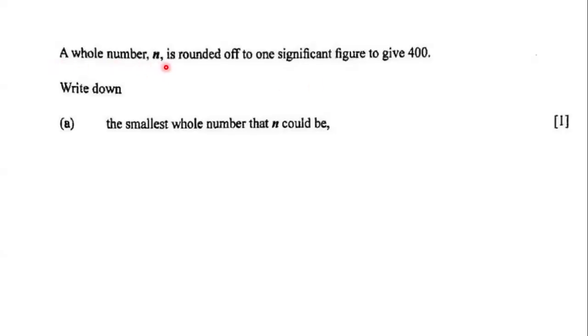A whole number n is rounded off to one significant figure to give 400. We need to determine the smallest whole number that n could be, such that when we round n to one significant figure, our result is 400.